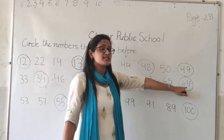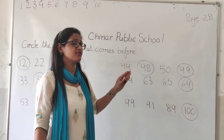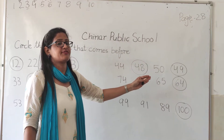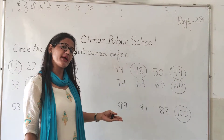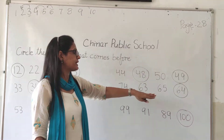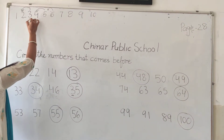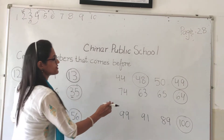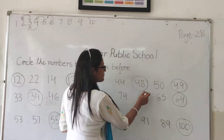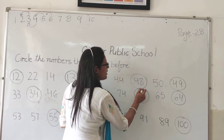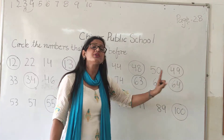Now, 6, 4 — sixty-four. We are doing forward counting, but we need to write the before number, so we do backward counting. Before 4, which number is coming? It is number 3. So 6, 3 — sixty-three. Circle 63.